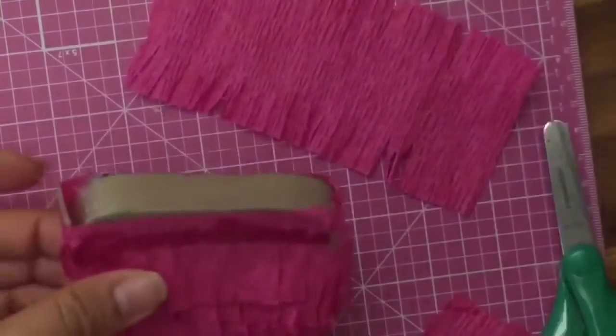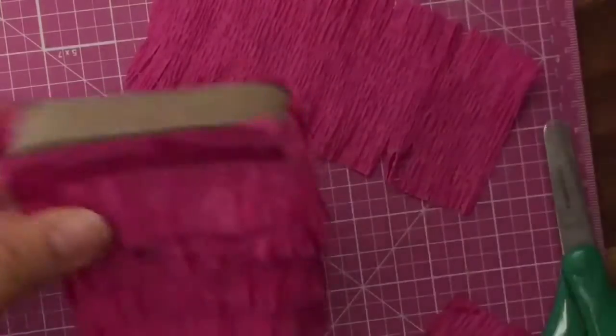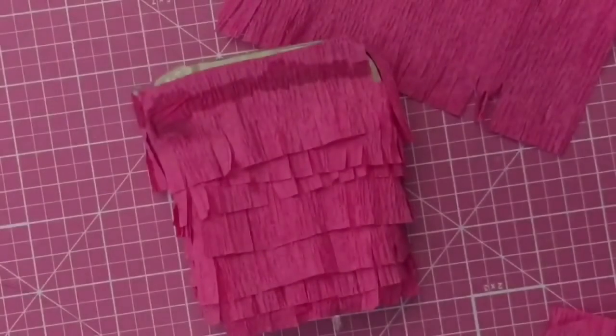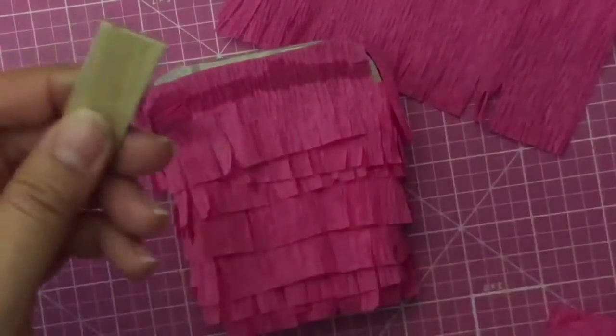Before you stick your top fringe onto your pinata, you do want to make sure that you glue your popsicle stick in. This is because you do not want to pierce your crepe paper with your popsicle stick as it may tear. So I'm just going to take my popsicle stick, cut it in half, and stick it into the slit I made previously.